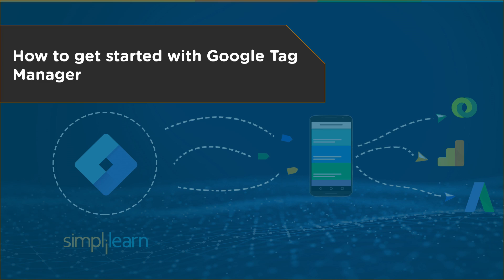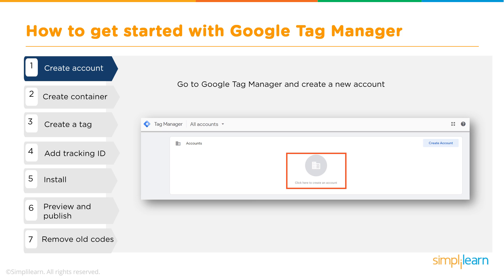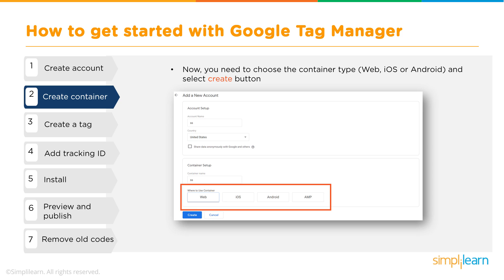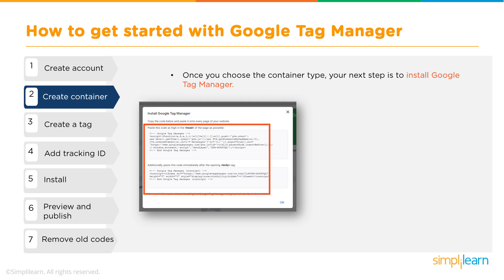How do you get started with Tag Manager? First, you create an account at tagmanager.google.com. When you create your account you'll set up a container, and you have choices: you can set it up for your website, for an iOS or Android app, or even for AMP (Accelerated Mobile Pages). Most people by default will set it up for their website.